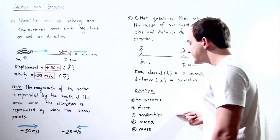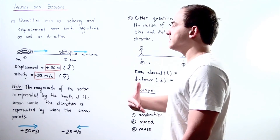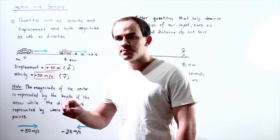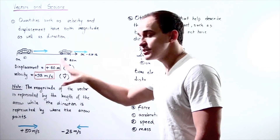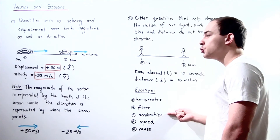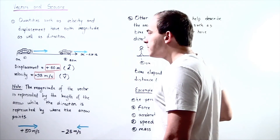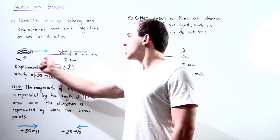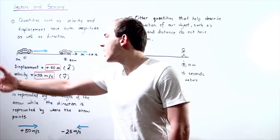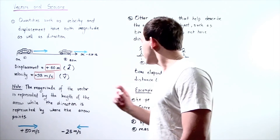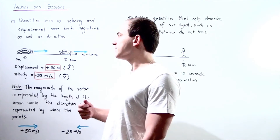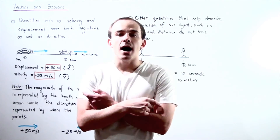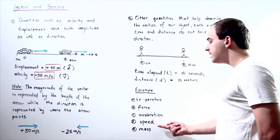What about acceleration? Acceleration is defined as the derivative of our velocity function. Because velocity is a vector and acceleration has velocity in its formula, acceleration is also a vector. If an object is accelerating in the same direction as its motion, the car is speeding up. If acceleration points in the opposite direction of velocity, the car is slowing down.